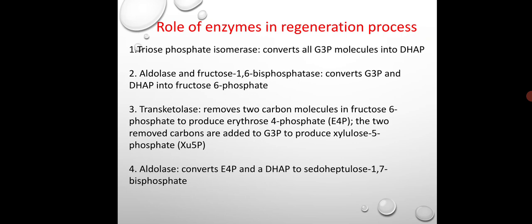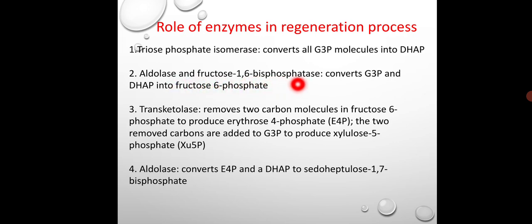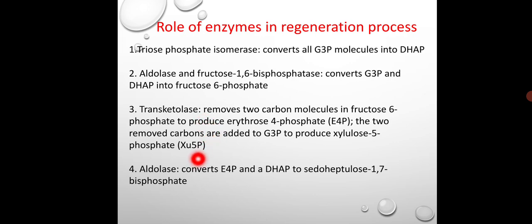What is the role of these enzymes in the regeneration process? The first enzyme — triose phosphate isomerase — is involved in the conversion of G3P molecules into DHAP (dihydroxyacetone phosphate). Then aldolase and fructose 1,6-bisphosphatase convert G3P and DHAP into fructose 6-phosphate.